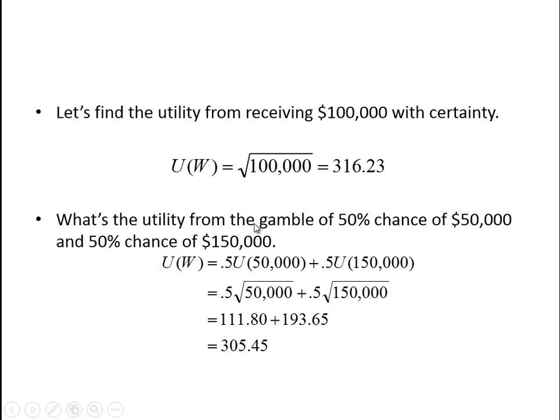What's the utility from the gamble of the 50% chance of winning $50,000 and the 50% chance of winning $150,000? It's 50% times the utility you receive if you get $50,000 plus 50% times the utility you receive if you get $150,000. So if we do this calculation, the square root of 50,000 times 0.5 is 111.8.